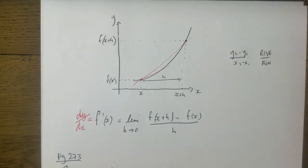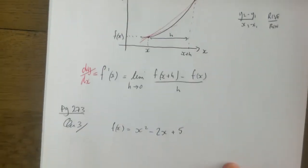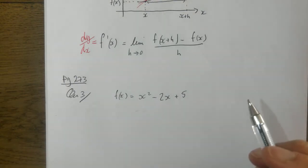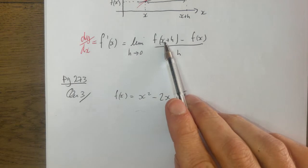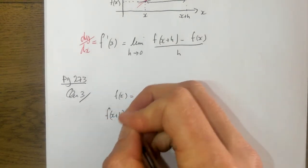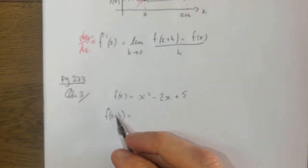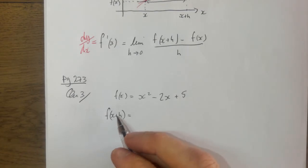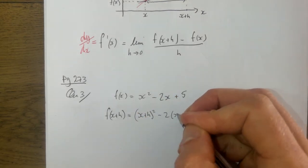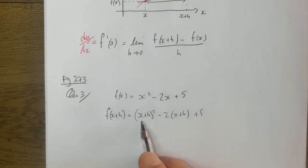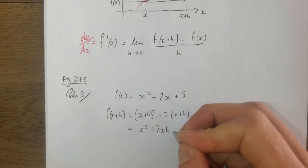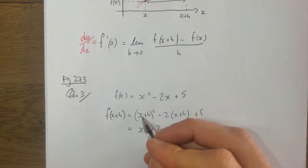Let's look at one of the homework questions: differentiate from first principles. Step one, we need to get the expression for f of x plus h. From our work on functions, f of x plus h means we just put x plus h in for x. So this is going to be x plus h squared minus two times x plus h plus five. Multiplying out carefully: x squared plus two x h plus h squared for this bracket.